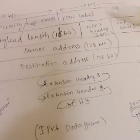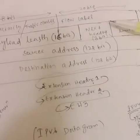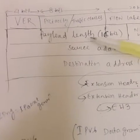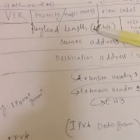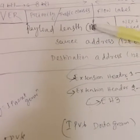Next is flow label, which we will discuss later. After that we have payload length, which is a 16-bit field.